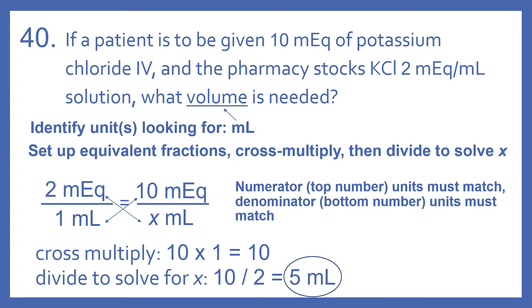One way to do this is to set up equivalent fractions, cross multiply, and then divide to solve for X. So our stock solution is KCL 2 milliequivalents per 1 milliliter. So 2 milliequivalents over 1 milliliter equals 10 milliequivalents over X milliliters.